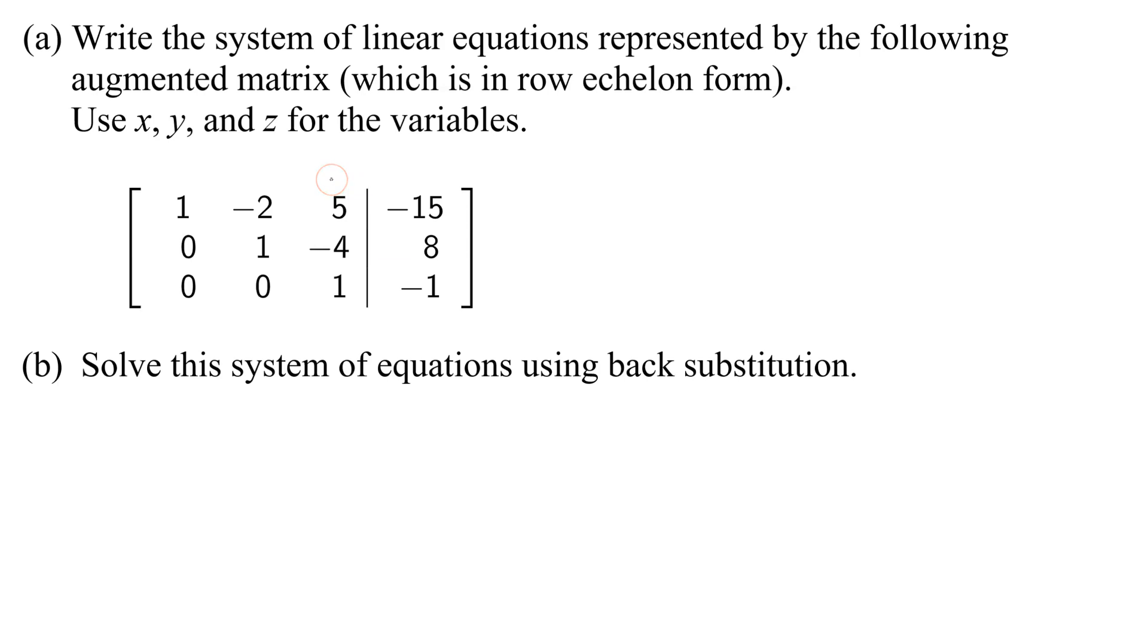This matrix is the last step in completing Gaussian elimination on an augmented matrix, and in this case, the row echelon form shows us that we have 1s on the diagonal, 0s below it, so our system has a unique solution. So let's write the system of equations.